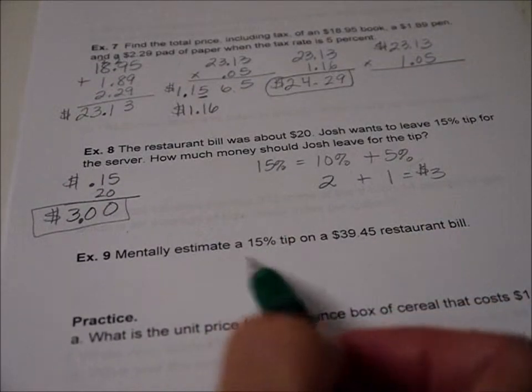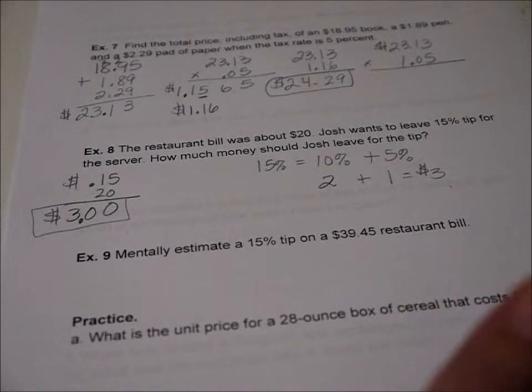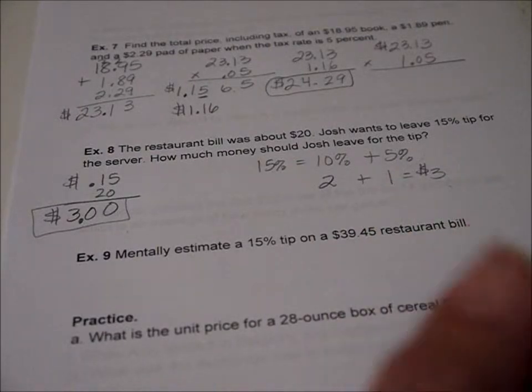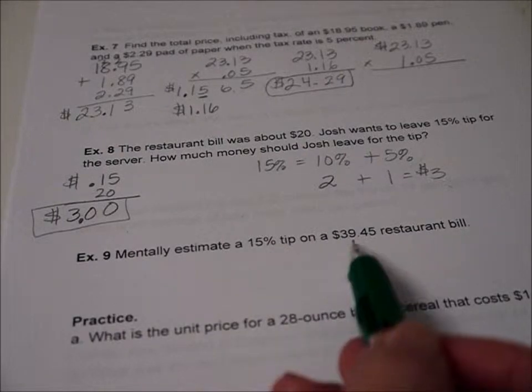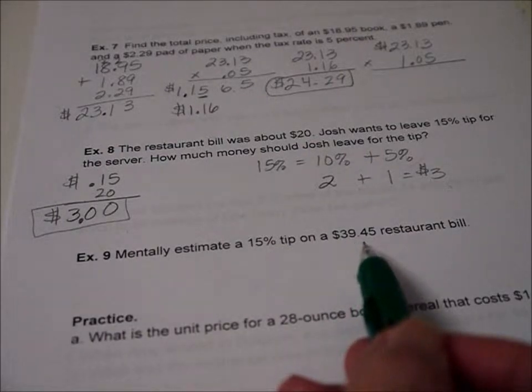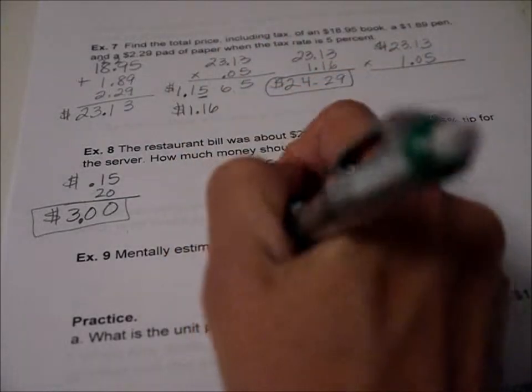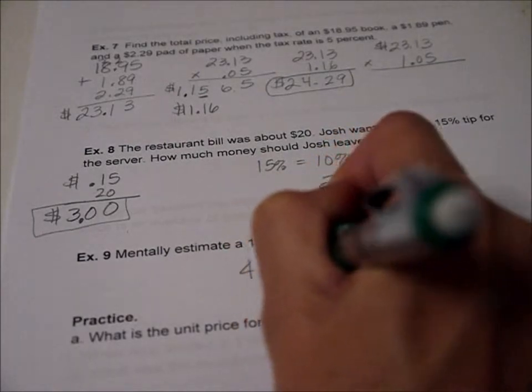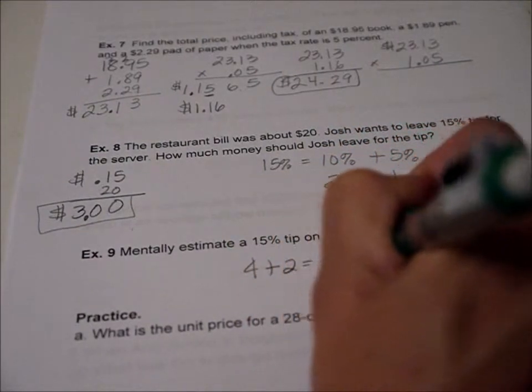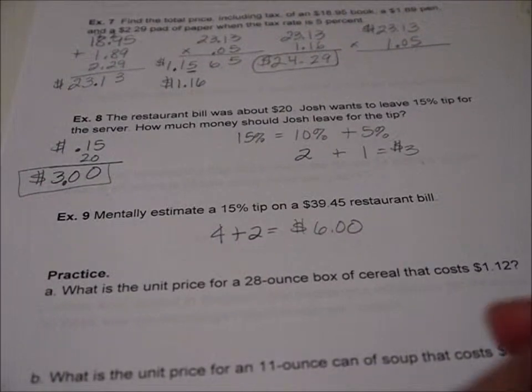We get to try this again. Mentally estimate a 15% tip on a $39.45 restaurant bill. So let's just round 39 to 40. So 15% of 40. What's 10% of 40? That's four. And 5% is half of four. So $6 is our tip.